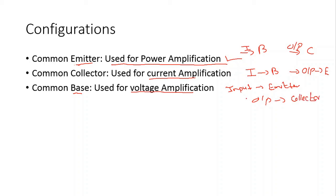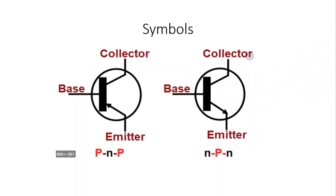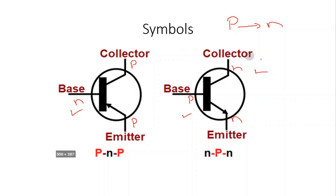The symbol of the PNP bipolar junction transistor is this one, and the NPN junction transistor is this one. Remember that the arrow always points from P to N. The arrow shows the direction of conventional current, and conventional current always flows from positive to negative. So if the arrow is pointing inward, that side is P and the other is N — that is why we can identify the NPN transistor from its symbol.